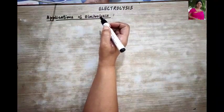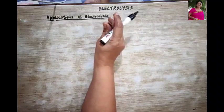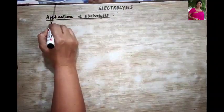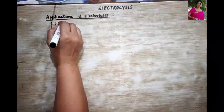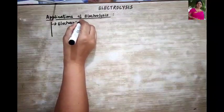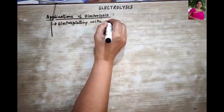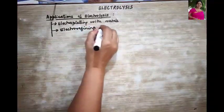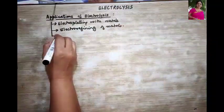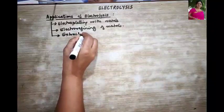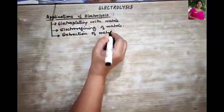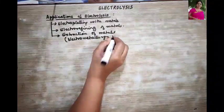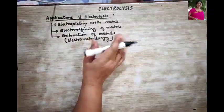Good morning children, welcome back to your chemistry class. Today in the chapter of electrolysis we are going to do the last part, that is the applications of electrolysis. The different applications of electrolysis are: electroplating with metals, electro-refining of metals, and extraction of metals, which is also called electrometallurgy. These are the three applications of electrolysis that we need to study.